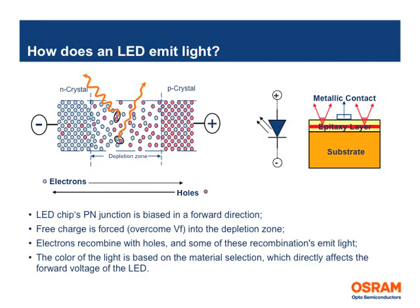This slide shows how an LED emits light when it is electrically biased. In short, electrons recombine with holes and some of these combinations emit light.